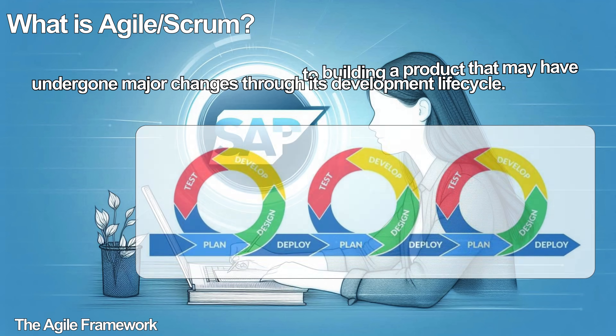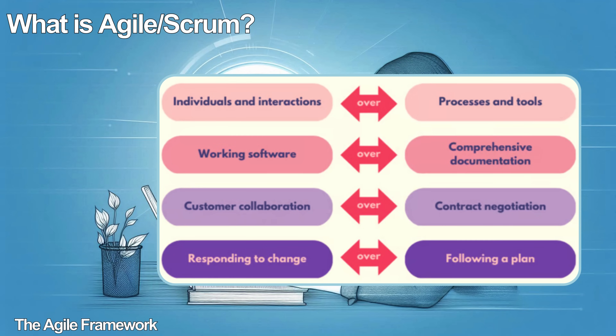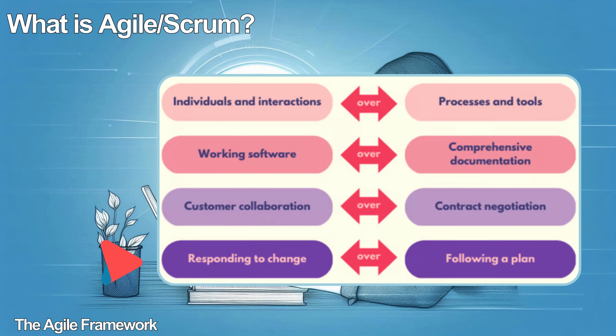The Agile Manifesto was published in 2001 and its four core values are: individuals and interactions over processes and tools, working software over comprehensive documentation, customer collaboration over contract negotiations, and responding to change over following a plan.